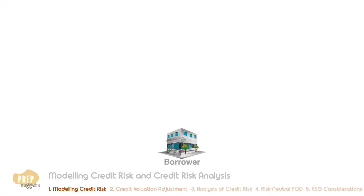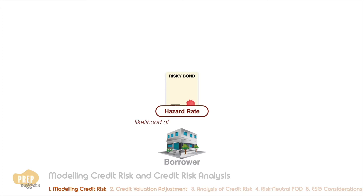When a borrower issues a risky bond, there is a likelihood for each year of the bond that the borrower may default. We call this probability the hazard rate, and for simplicity we assume a constant hazard rate of four percent for each year.